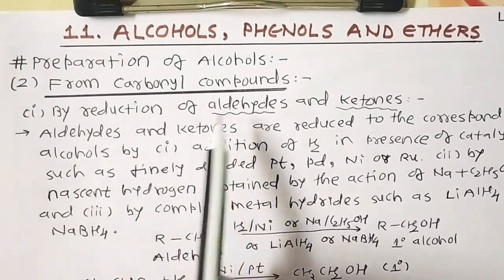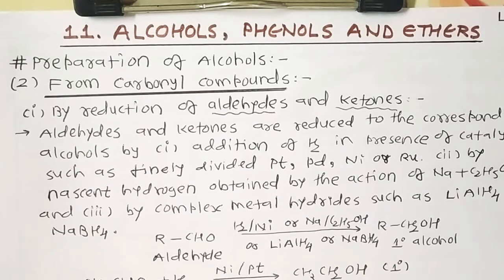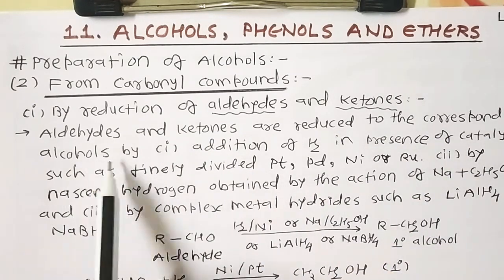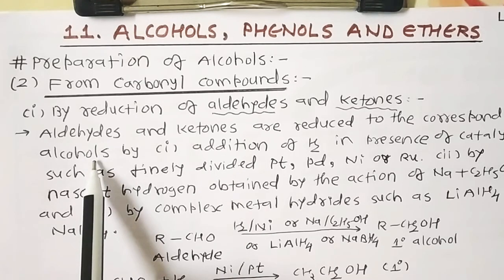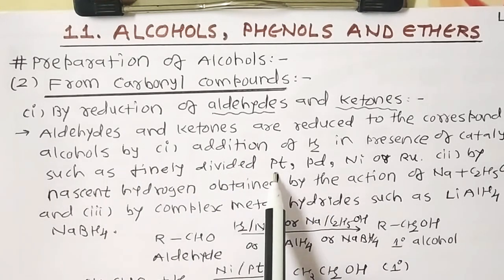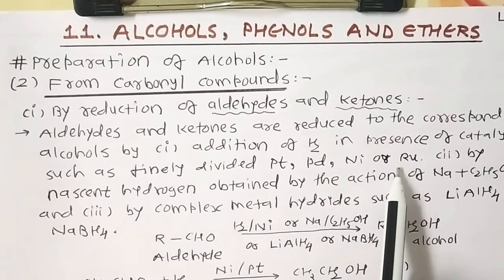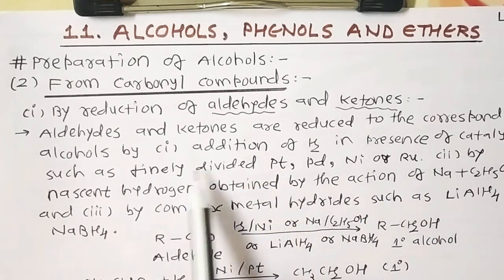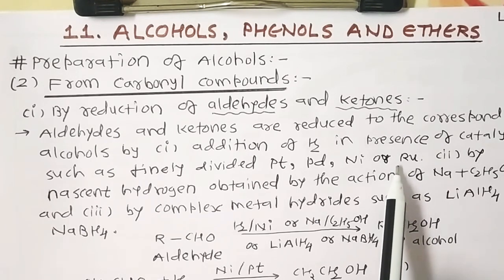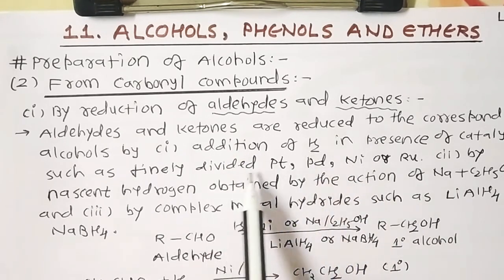Our first point is the preparation by reduction of aldehydes and ketones. Reduction means either we add hydrogen or we remove oxygen — both phenomena are simultaneously called a reduction process. Aldehydes and ketones are reduced to the corresponding alcohols by different reducing agents, like addition of hydrogen in the presence of catalysts such as finely divided platinum, palladium, nickel, or ruthenium. This is an addition process because aldehyde and ketone have a double bond — a pi bond — so they always react by addition of hydrogen in the presence of such catalysts.